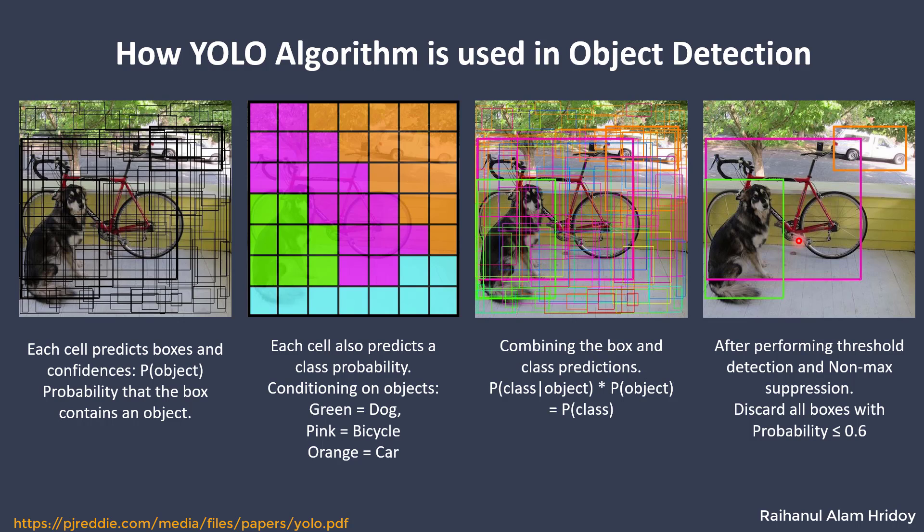Finally we use the non-max suppression technique, which removes boxes with low probabilities and keeps only the box with maximum probability. So our final image will look like this. Here each image has a corresponding probability value. We can see that this box has less than this outer green box. So finally we can see that this outer green box has higher probability, so this is the final box which predicts this object. Similarly for this object and for this object. This is how this algorithm works.